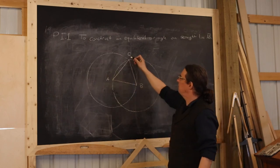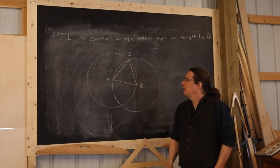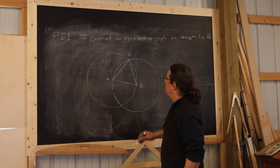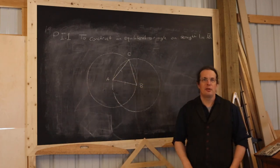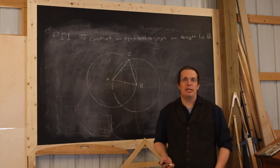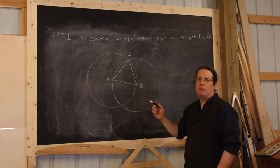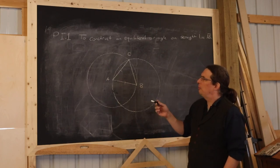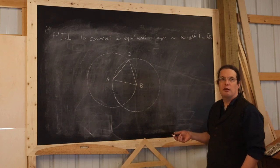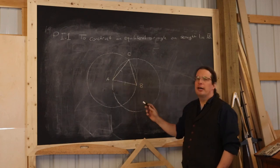Triangle ABC. And Euclid claims that that triangle is equilateral, meaning the length of that segment equals the length of that segment and equals the length of that segment. Now it's important to understand that so far we've just shown you a technique, which is not a proof. We don't know for sure yet that those line segments should be equal. So in order to complete this proposition, we have to offer the proof that this construction results in the figure that we want, namely an equilateral triangle where one side is AB.